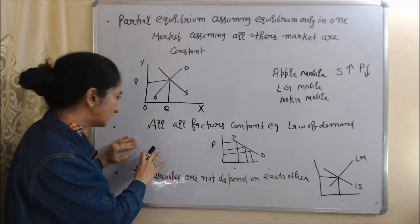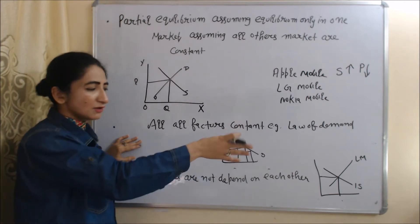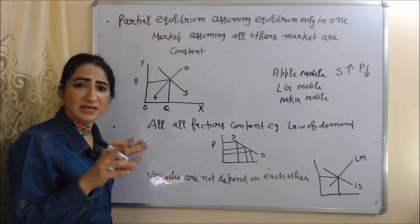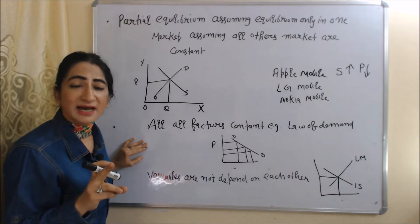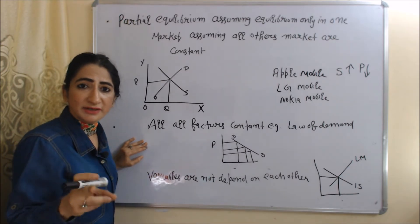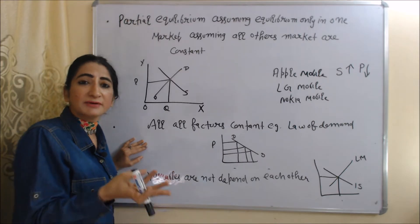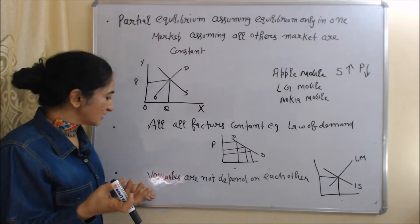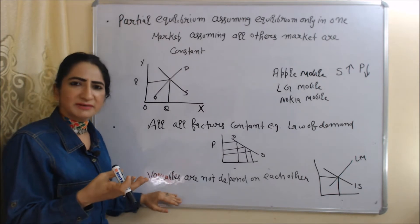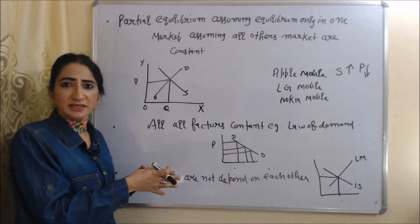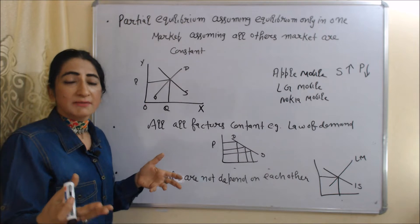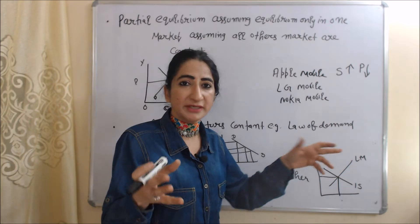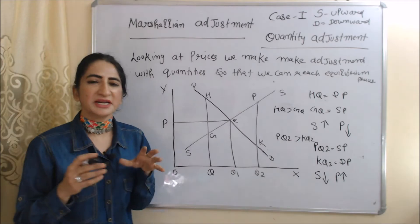Another feature of partial equilibrium is that all other factors are assumed constant. For example, in the law of demand, we assume demand is only affected by price, but in reality demand is affected by many factors such as tastes and preferences of customers, income, substitute products, etc. Also, partial equilibrium ignores interdependence — variables are assumed not to depend on each other, but in the IS-LM curve we study how the product market and money market depend on each other.